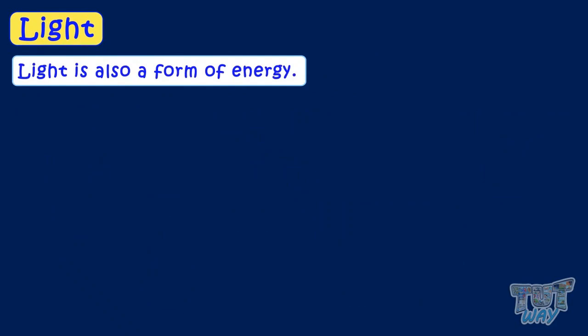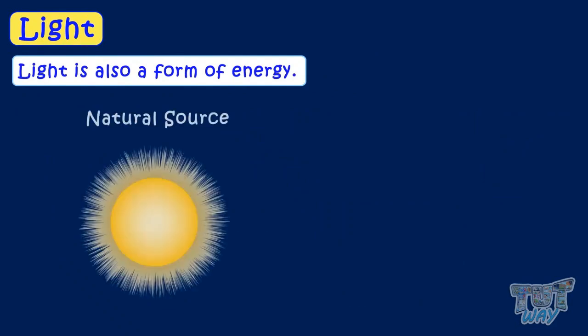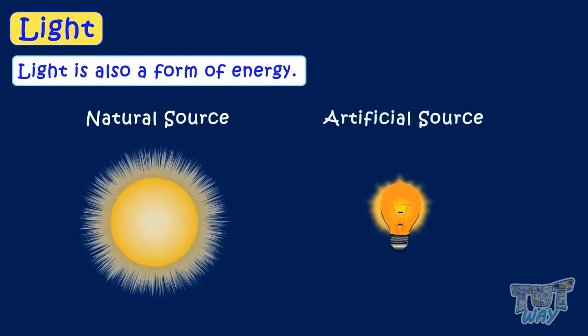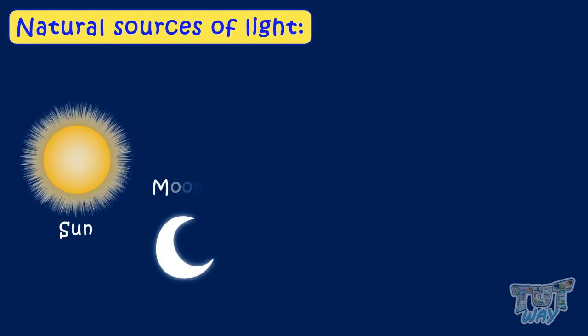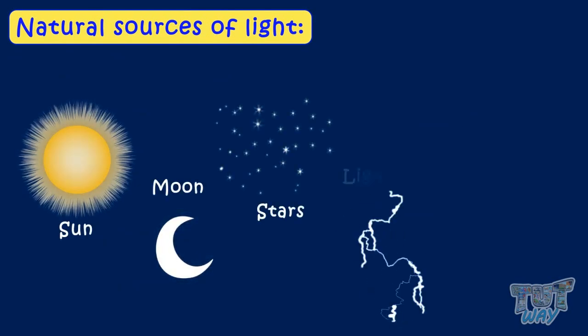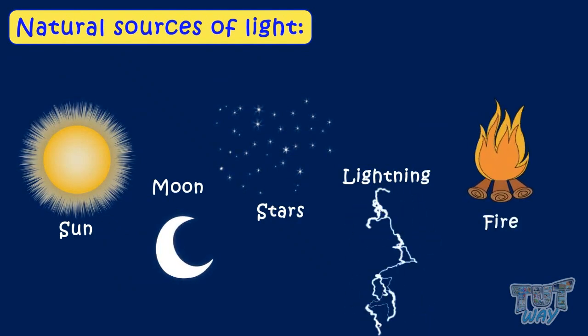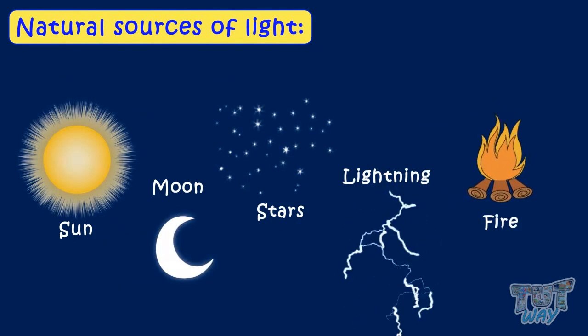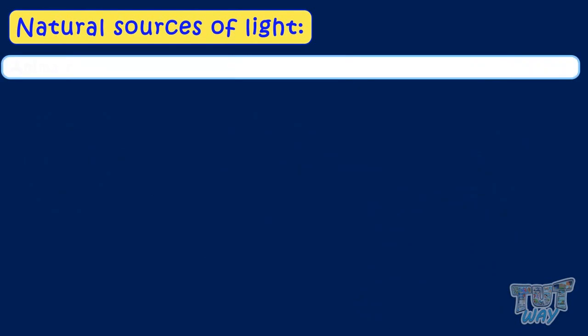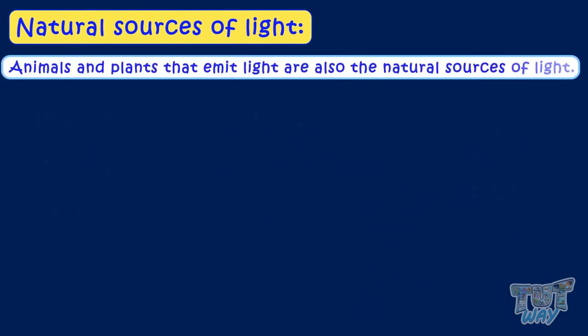Light can be from a natural source or an artificial source. Now let's see some natural sources of light. Light from sources like the sun, moon, stars, lightning, and fire are the natural sources of light. There are also certain animals and plants that emit light and are natural sources of light.